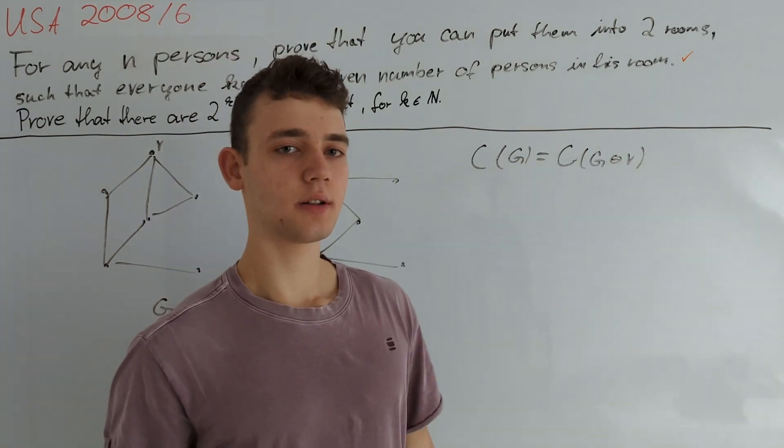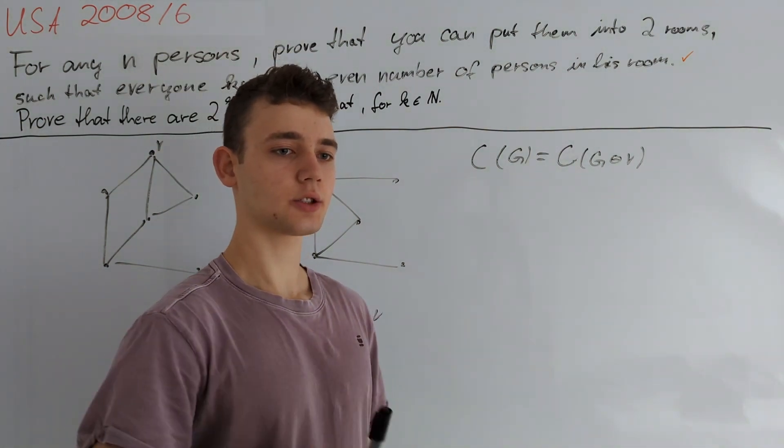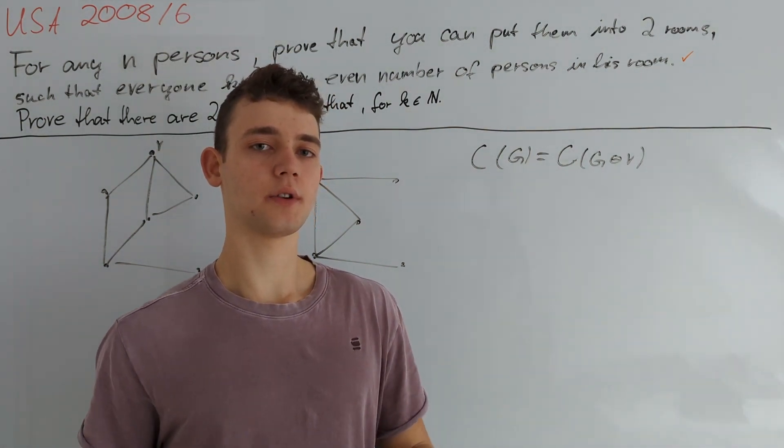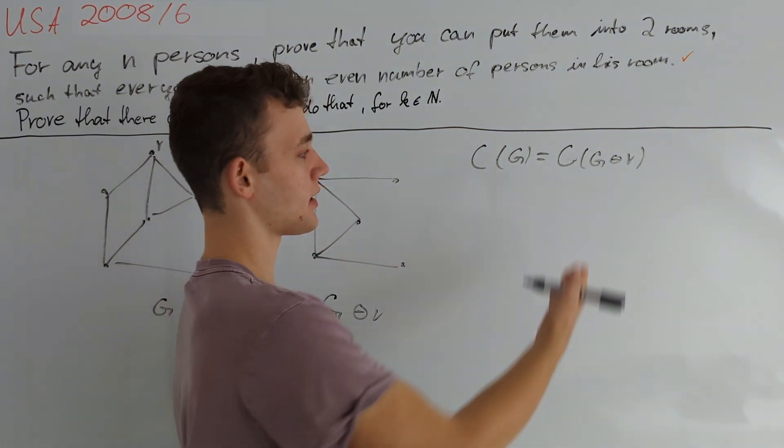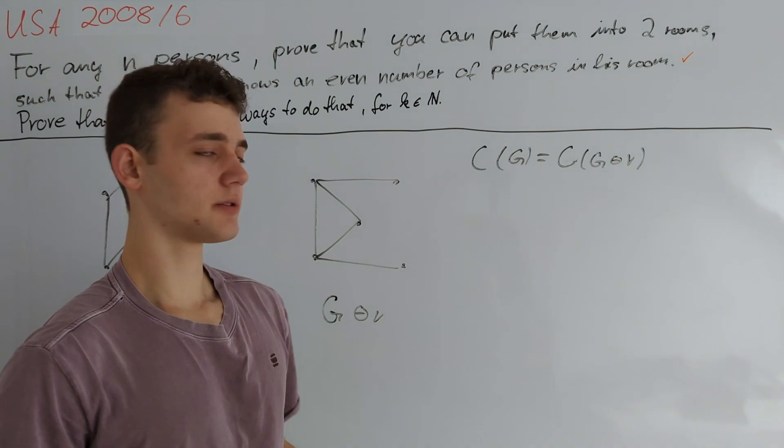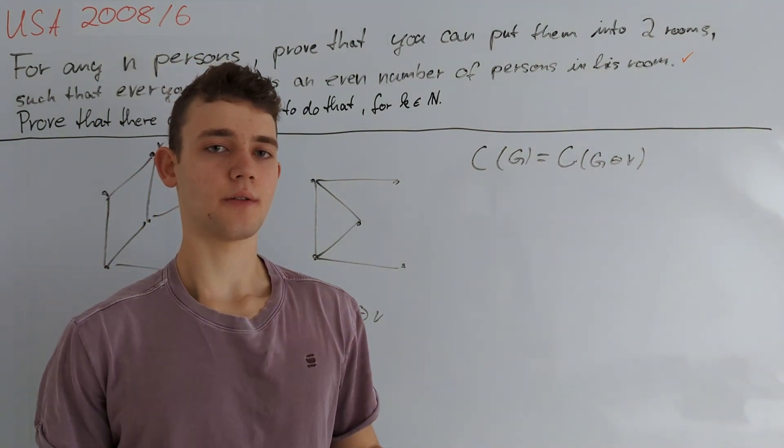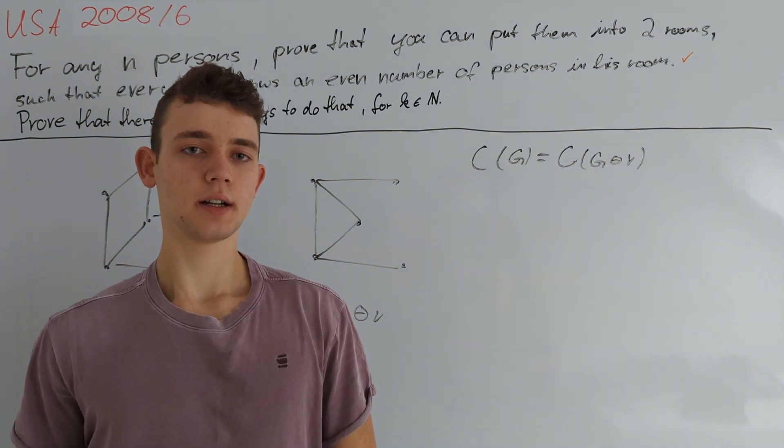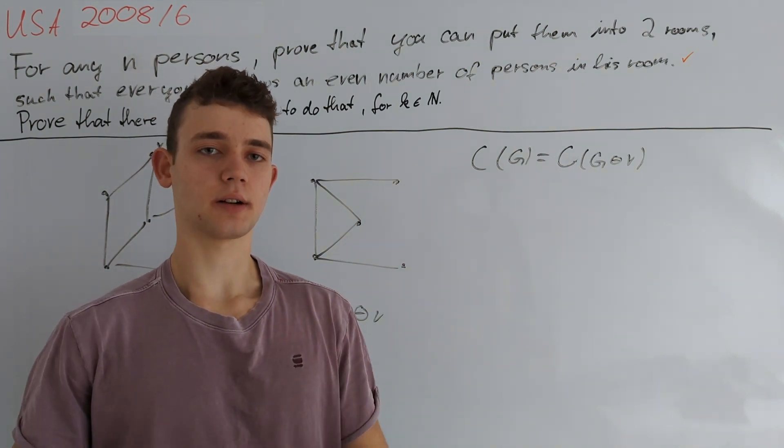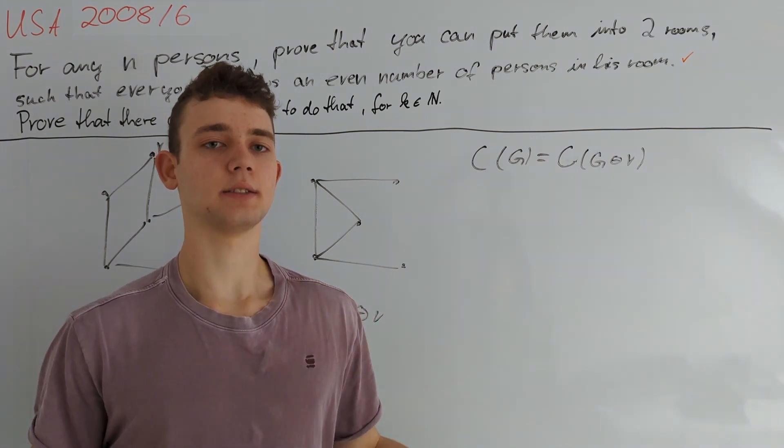At this point our approach kind of fails because now we can do our induction and end up with a graph where all the vertices are of even degree but then we cannot continue with that operation. So what we would really like is to get an operation which we can apply on a graph where all the vertices are of even degree such that we construct or get a vertex in the other graph where there exists a vertex of odd degree.